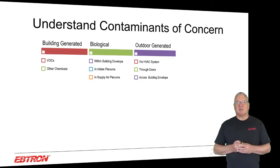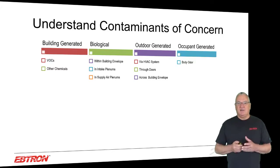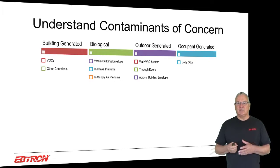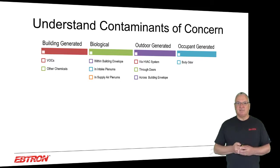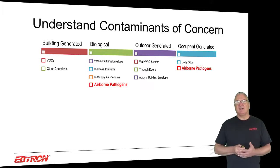Entry through doors and across the building envelope is more pressure-related — bringing in untreated, unfiltered outdoor air because the building is negative. And then finally we have occupant-generated contaminants, which too many people concern themselves with exclusively. This is primarily body odor or human bio-effluents. With COVID-19, we now also have airborne pathogens, whether you consider them biological or occupant-generated — it really doesn't matter.